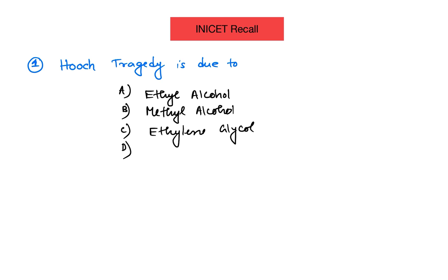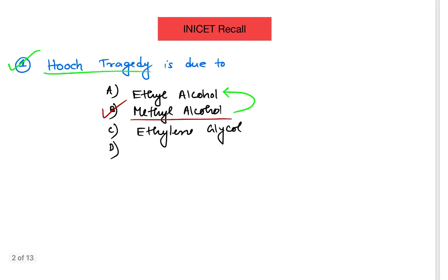Starting with question number one: Hooch tragedy is due to which poisoning? This is a forensic medicine question. The answer will be methyl alcohol. As you all know, option A, ethyl alcohol, is used for treatment of methyl alcohol poisoning.